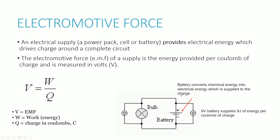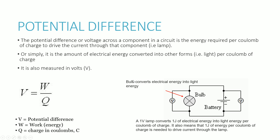Potential difference is the amount of energy required per coulomb of charge to drive the current through a specific component. Whilst electromotive force deals with the energy supplied to charge at a supply unit like a battery, the potential difference is mainly to do with how much energy is required to pass current through a certain component, such as a resistor or a light bulb — it relates to the components in the circuit rather than the supply.